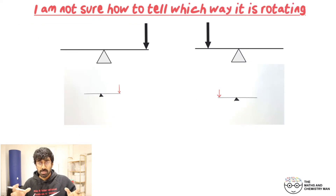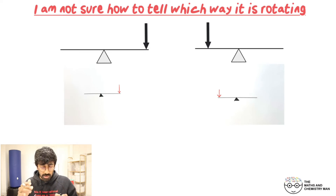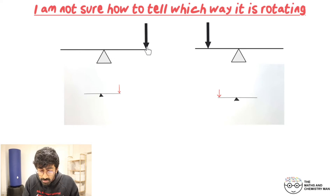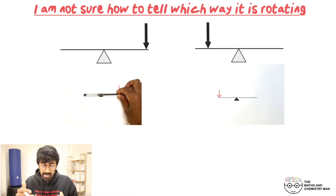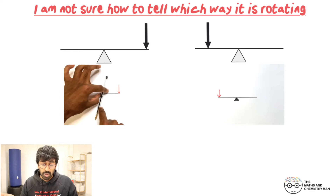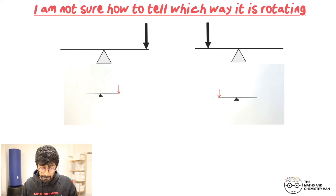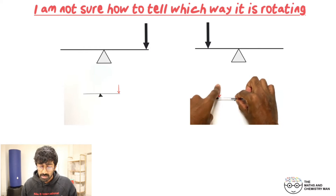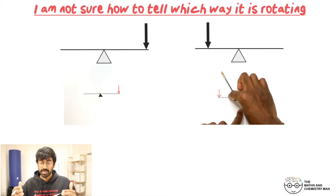You might be thinking you're not sure which way it's spinning. So you can use your pencil or your hands to tell which way it is spinning. Grab your pen, place it as if it was the seesaw, put your hand on the pivot point, and then slide your finger down on the force — you can see it turning in the clockwise direction. Do the same with the other one, and you'll see it's tilting in the anti-clockwise direction.